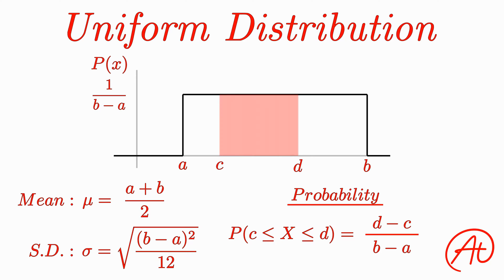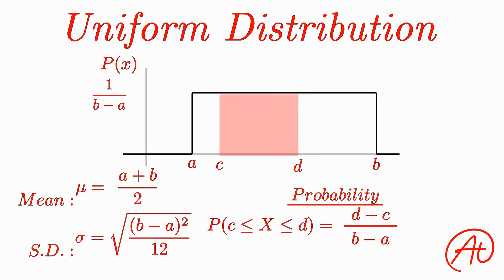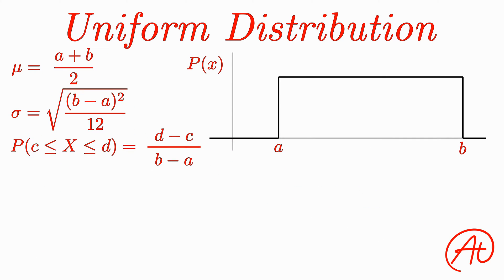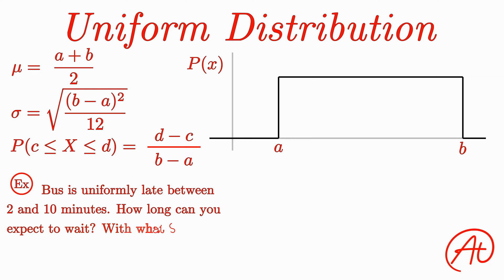Now that we covered some general terms from the uniform distribution, let's put the theoretical garbage aside and see how this works with a concrete example. Say that you take the bus to work, and every day the bus is uniformly late between 2 and 10 minutes. On any given day, how long can you expect to wait? And with what standard deviation? Finally, if the bus is late more than 7 minutes, you'll be late to work. So what is the probability that you'll be late on any given day?